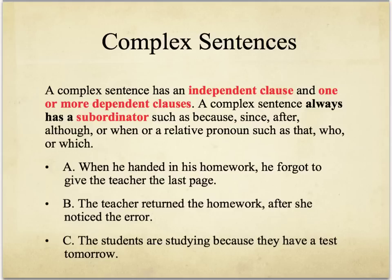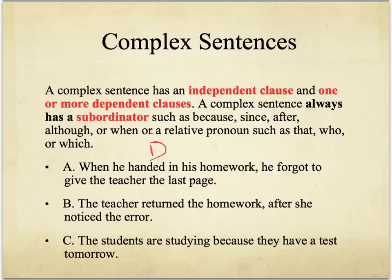Lastly, we have a complex sentence. A complex sentence has an independent clause and a dependent clause. That means one part of the sentence would be incomplete on its own, while the other is a complete sentence. An incomplete sentence is one where you don't have a complete thought. For example: 'when he handed in his homework' — could I say that and nothing else? It doesn't make sense, so I know immediately this is the dependent clause. I write a D so I know, and it's followed by a comma.